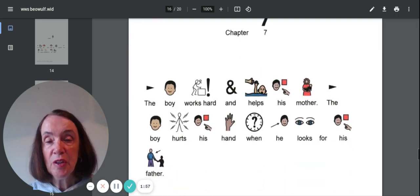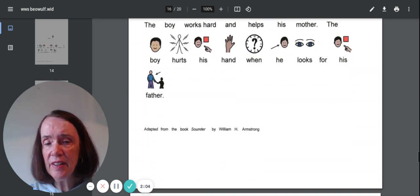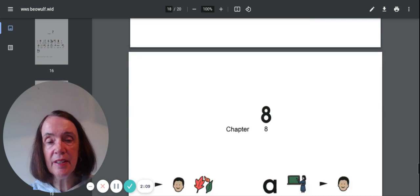Chapter seven. The boy works hard and helps his mother. The boy hurts his hand when he looks for his father. What happens here?